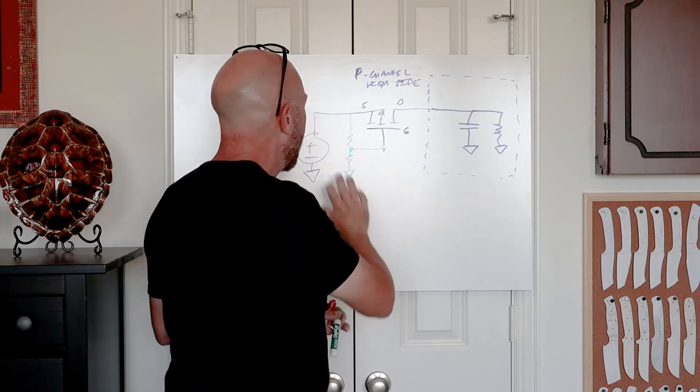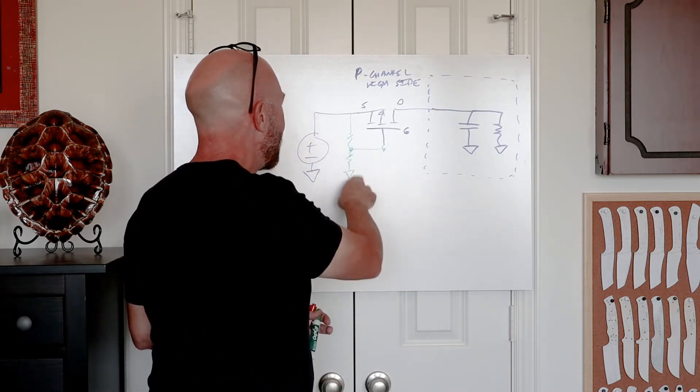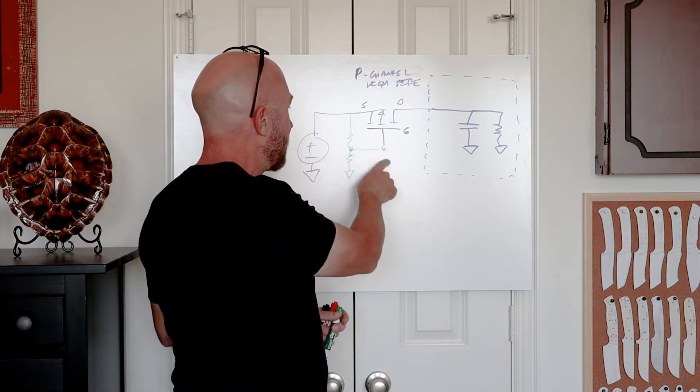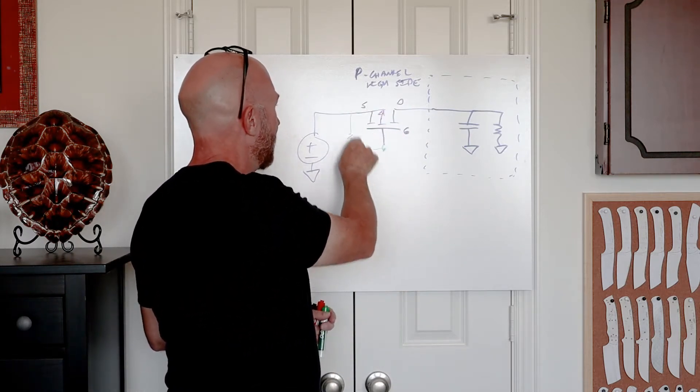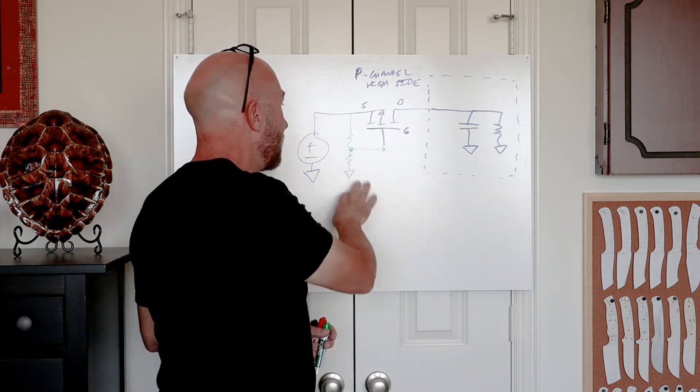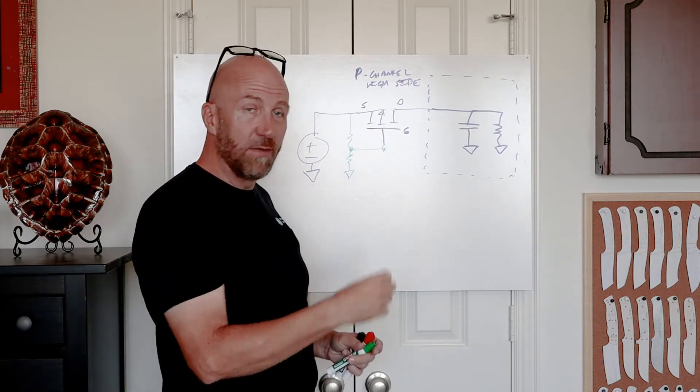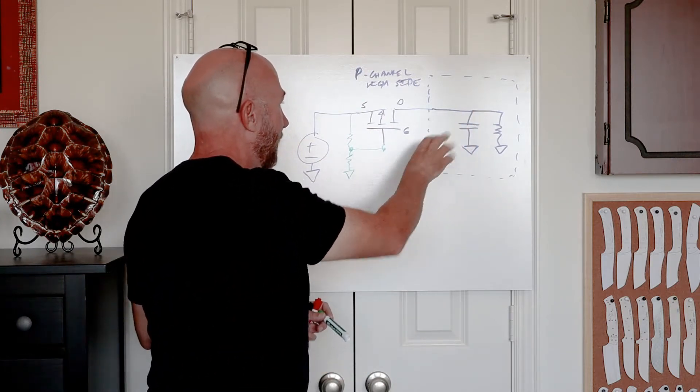Now this is okay. This would turn on the FET, but again, it doesn't give us a nice controlled turn-on because once we reach the gate-to-source threshold voltage, in other words, once the gate drops a threshold voltage below the source, this thing turns on pretty strongly. And as it continues to go lower, it turns on even stronger. So again, you've got kind of an uncontrolled inrush to the load device.